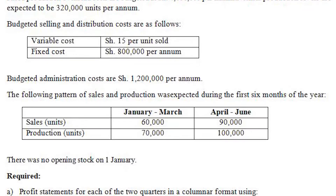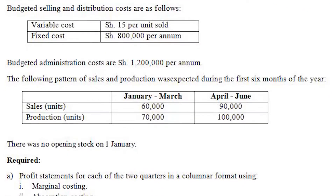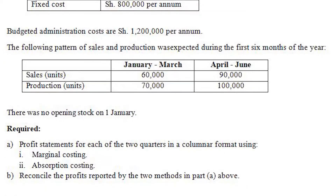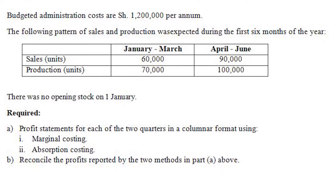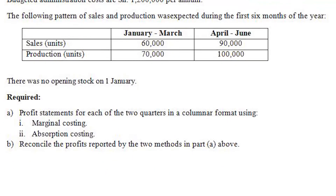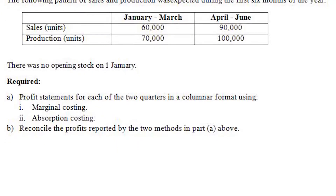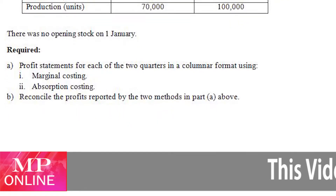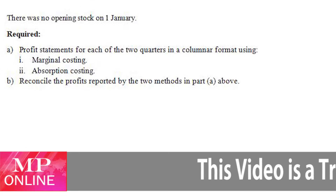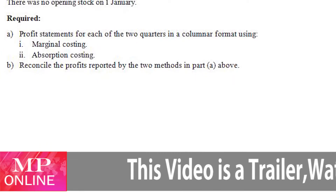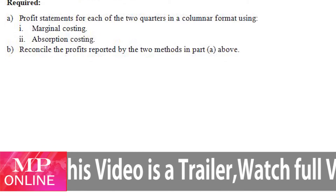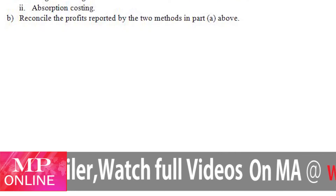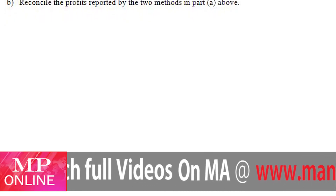The following pattern of sales and production was expected during the first six months of the year, between January to March and April to June. Sales in units: 60,000 and 90,000 respectively. Production in units: 70,000 and 100,000 respectively. There was no opening stock on 1st January. Required: part A, profit statements for each of the two quarters in columnar format using (i) marginal costing and (ii) absorption costing. Part B, reconcile the profits reported by the two methods in part A.